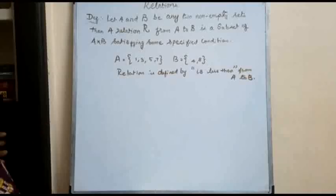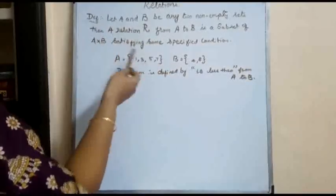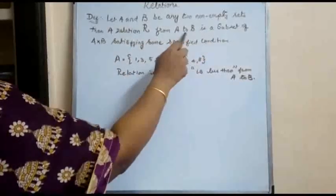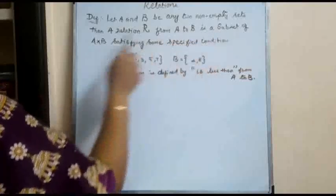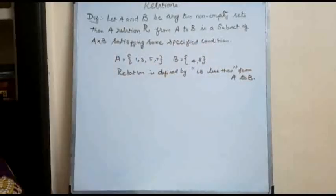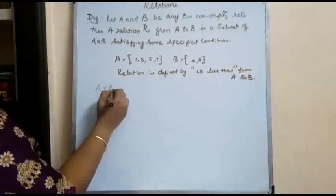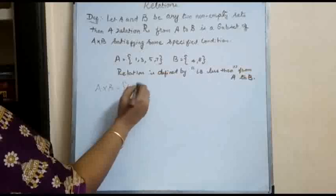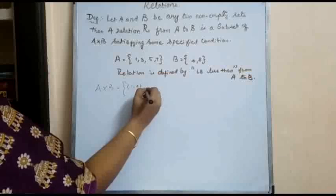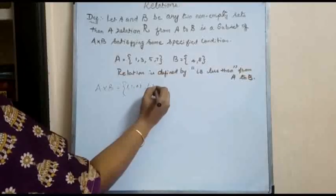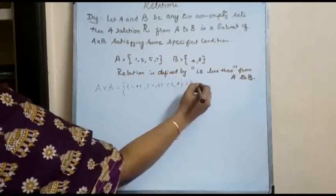Now we have to understand the definition from this illustration. The relation R from A to B is a subset of A cross B. So let us find A cross B first. A cross B is the set of ordered pairs: (1,4), (1,8), (3,4), (3,8)...